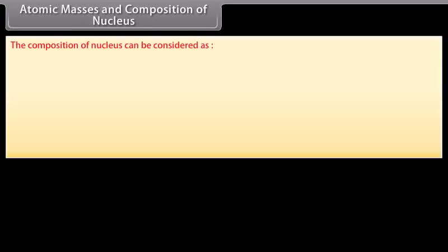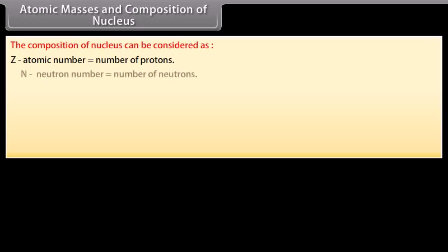The composition of nucleus can be considered as: Let Z be atomic number which is equal to number of protons. Let N be neutron number which is equal to number of neutrons. Let A be mass number which is equal to Z plus N, which is equal to total number of protons and neutrons.